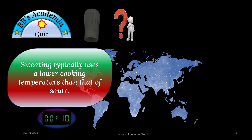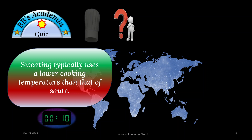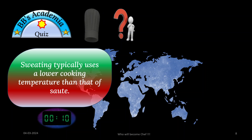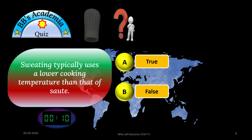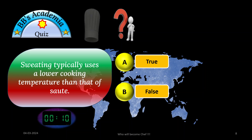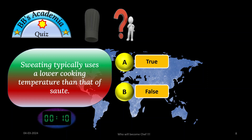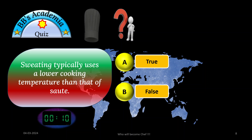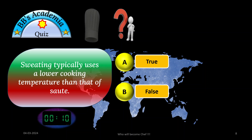Question number 3 says: sweating typically uses a lower cooking temperature than that of sautéing. As usual, you have got two options — either this statement is true or false — and you have to identify which one is correct, with proper justification. Ten seconds allotted as usual, and let us start thinking.